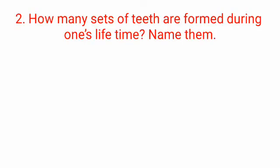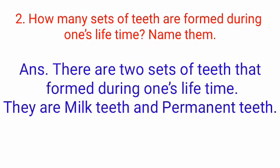Question two: how many sets of teeth are formed during one's lifetime? Name them. Answer: there are two sets of teeth formed during one's lifetime — milk teeth and permanent teeth. Milk teeth number 20 and appear from around age 6 to 12, when permanent teeth start to come in.